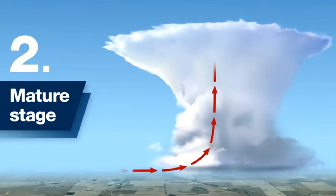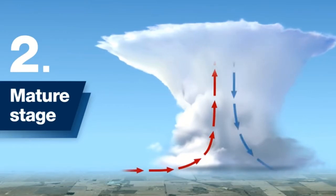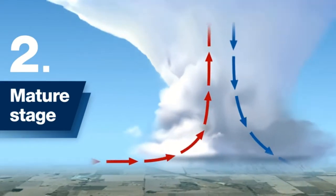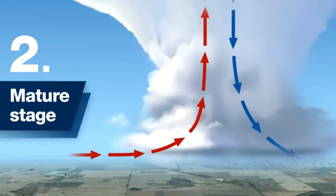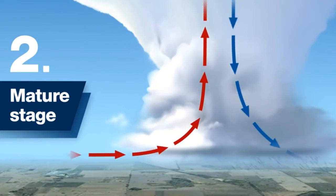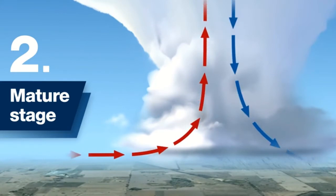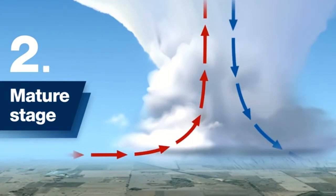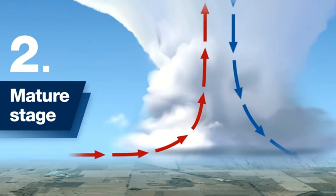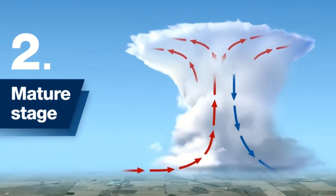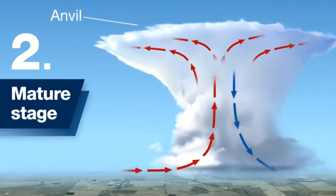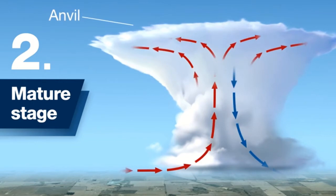Precipitation beginning to fall from the cloud base is your signal that a downdraft has developed and a cell has entered the mature stage. Thunderstorms reach their greatest intensity during the mature stage. The duration of the mature stage is closely related to the severity of the thunderstorm.